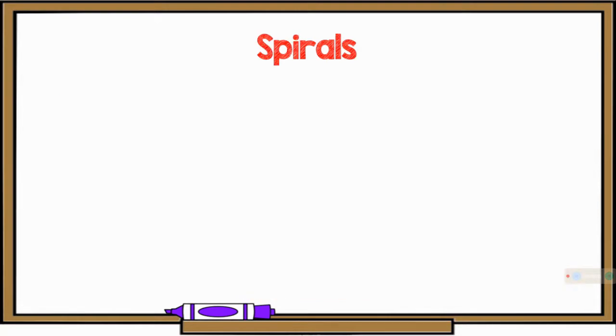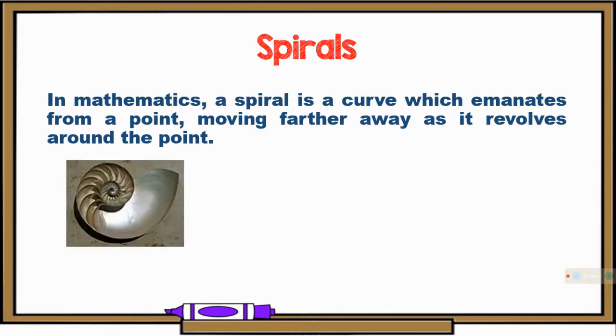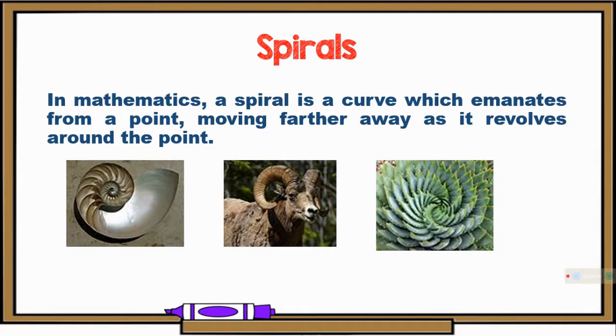Now, let's talk about spirals. In mathematics, a spiral is a curve which emanates from a point moving farther away as it revolves around the point. Some popular examples are the nautilus shell, the curved horns of certain animals, and this spiral aloe.